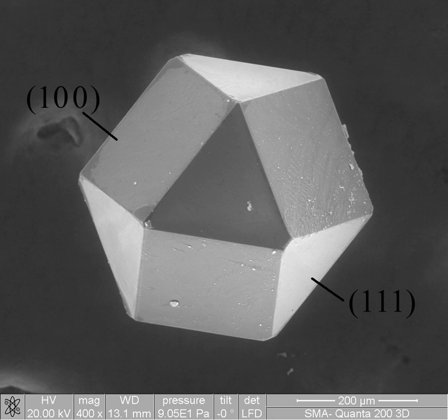Nanomaterials describe, in principle, materials of which a single unit is sized between 1 and 1000 nanometers but is usually 1 to 100 nanometers. Nanomaterials research takes a materials science-based approach to nanotechnology, using advances in materials metrology and synthesis which have been developed in support of microfabrication research. Materials with structure at the nanoscale often have unique optical, electronic, or mechanical properties.